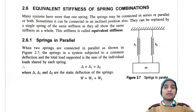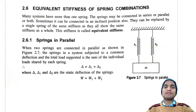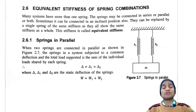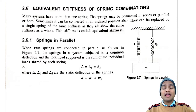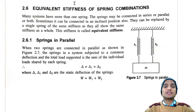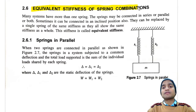Hello and welcome everyone. So far we have discussed the solution of equations of motion and different numericals based on that. Now we are going to encounter systems having more than one spring. When springs are connected either in series or parallel, or both, this is called a combination of springs. Today's topic is the equivalent stiffness of spring combinations.